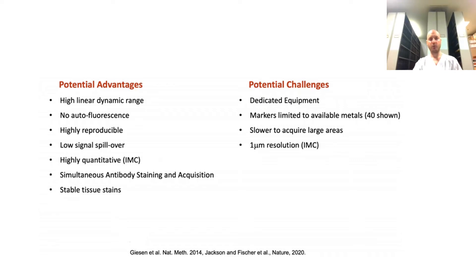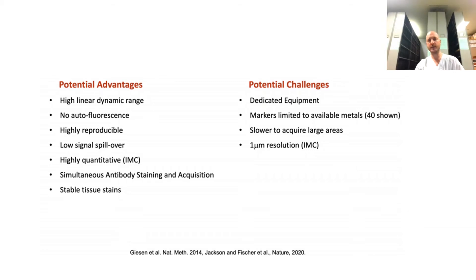A big benefit is that we are staining all the antibodies at the same time with a single cocktail, which allows for improved standardization across different tissues and samples. A unique benefit is that tissue staining for imaging mass cytometry is very stable. Once you stain your tissue with antibodies of interest and dry them out, you can store them and use them up to one year later with no decrease in signal. This is because the isotopes are embedded in the samples and do not degrade in relation to enzymatic activity.